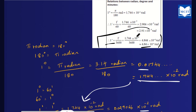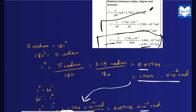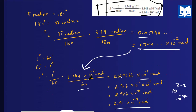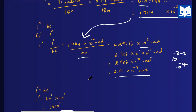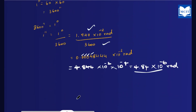Summary: 1 second value, 1 minute value, and 1 degree value have all been derived in radians.